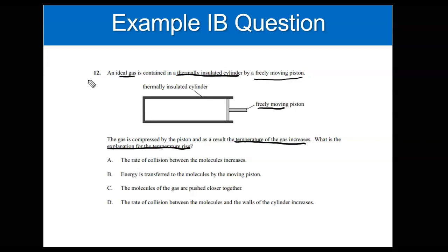What is the explanation for the temperature rise? The problem with the answer choices is that some of them are true, but they don't answer the question being asked. For example, the gas is compressed by the piston, so pressure is going to increase and the rate of collision between molecules is going to increase. A is not the correct answer — it is a true statement, but it does not answer the question, which is why is the temperature rising?